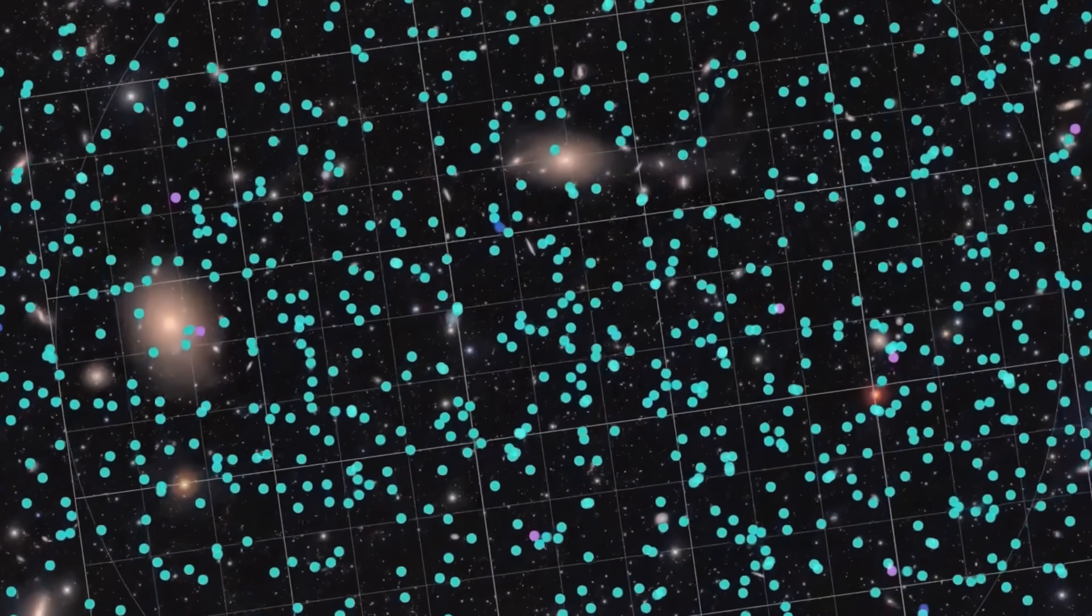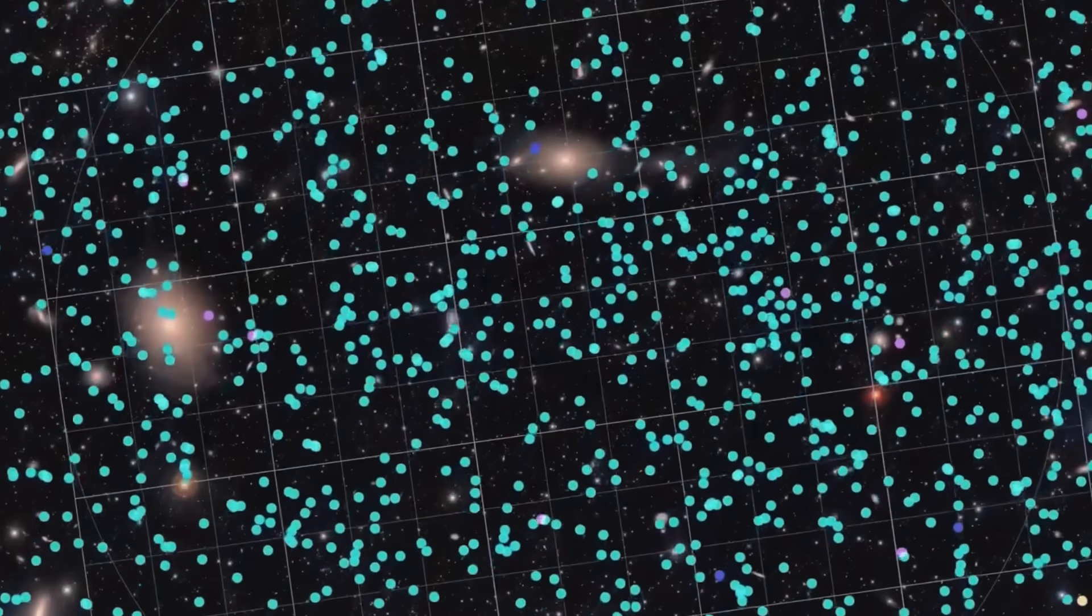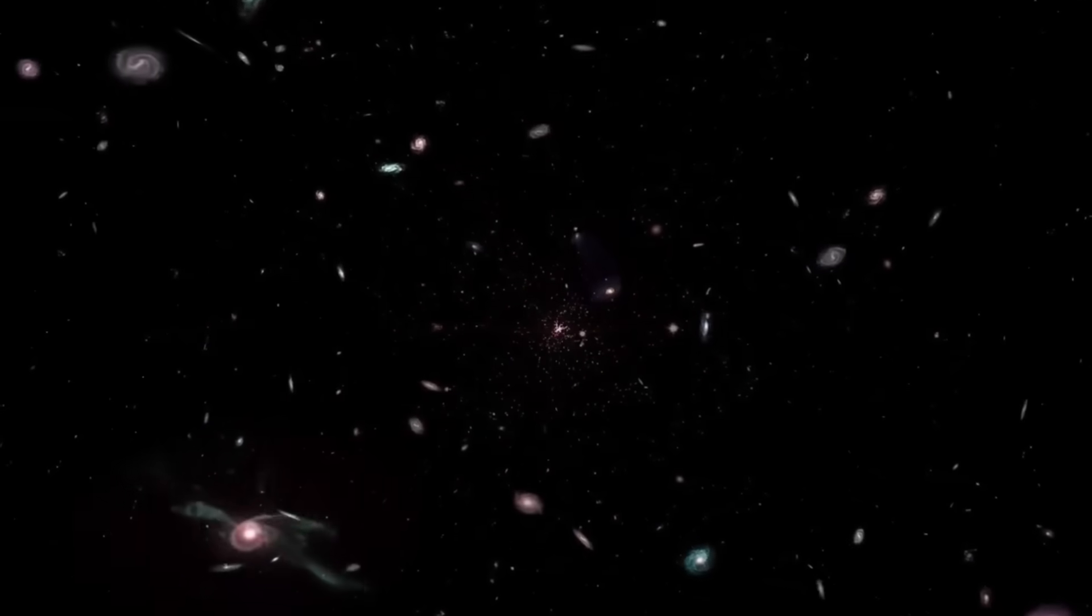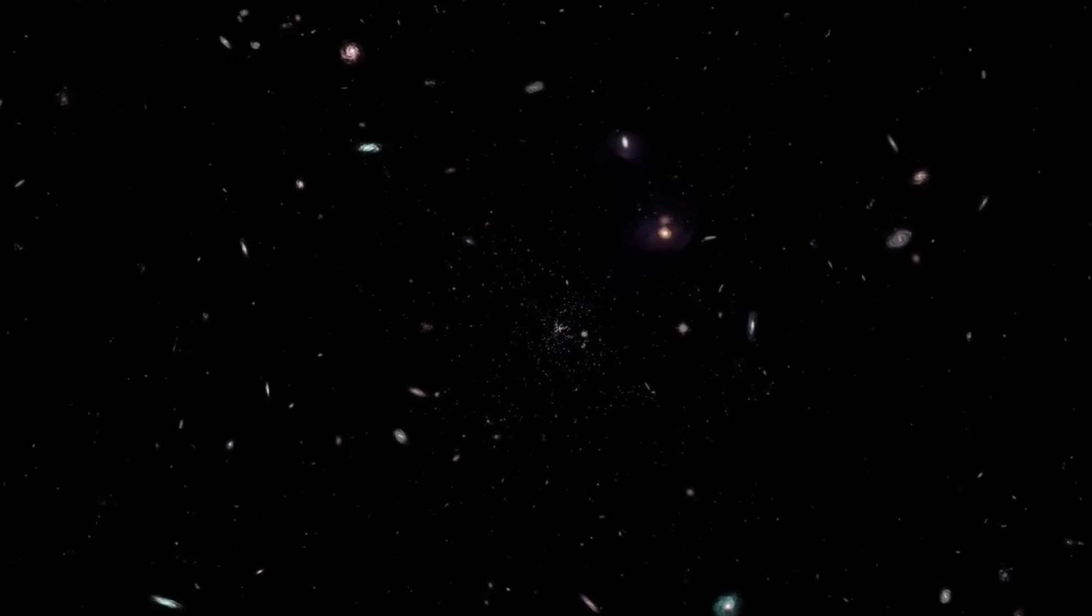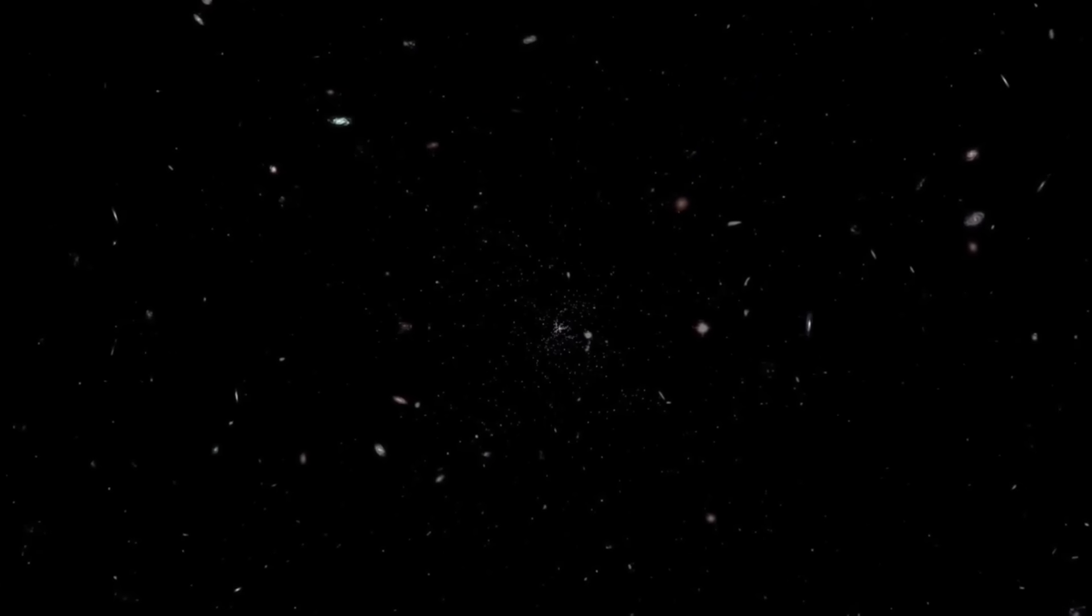Some theorists have proposed that this may point to a higher-order geometry of the cosmos, something we're not designed to perceive. If the universe is a projection of a deeper mathematical structure, a kind of simulated lattice, then these patterns are not just beautiful, they're intentional. Webb may not be discovering randomness. It may be uncovering design.